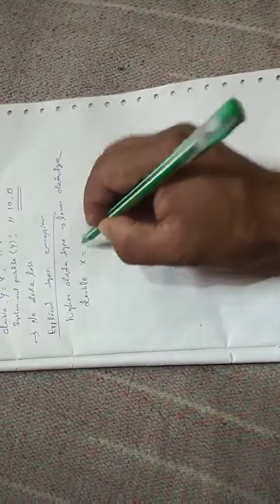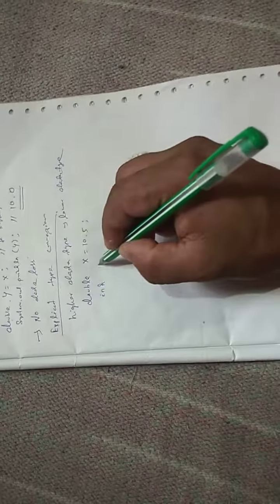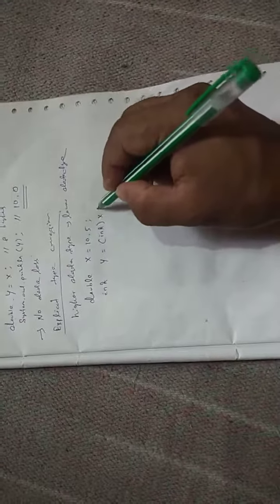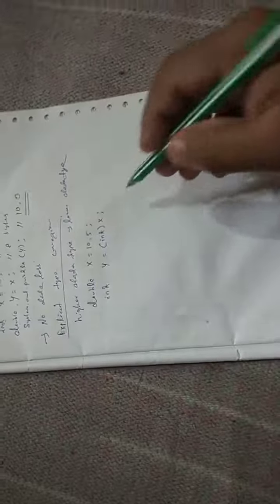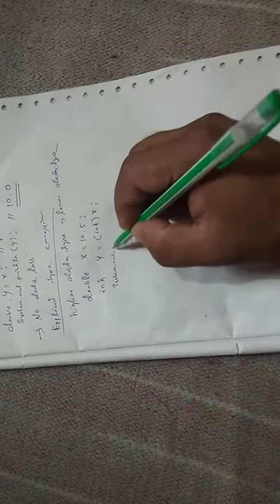double x equals 10.5, integer y equals Convert.ToInt32(x), then Console.WriteLine(y).